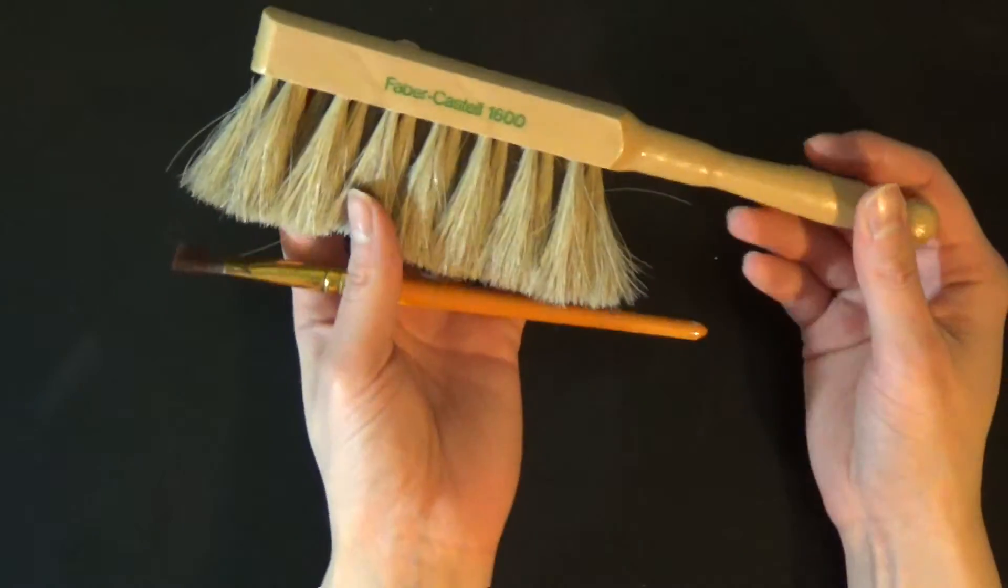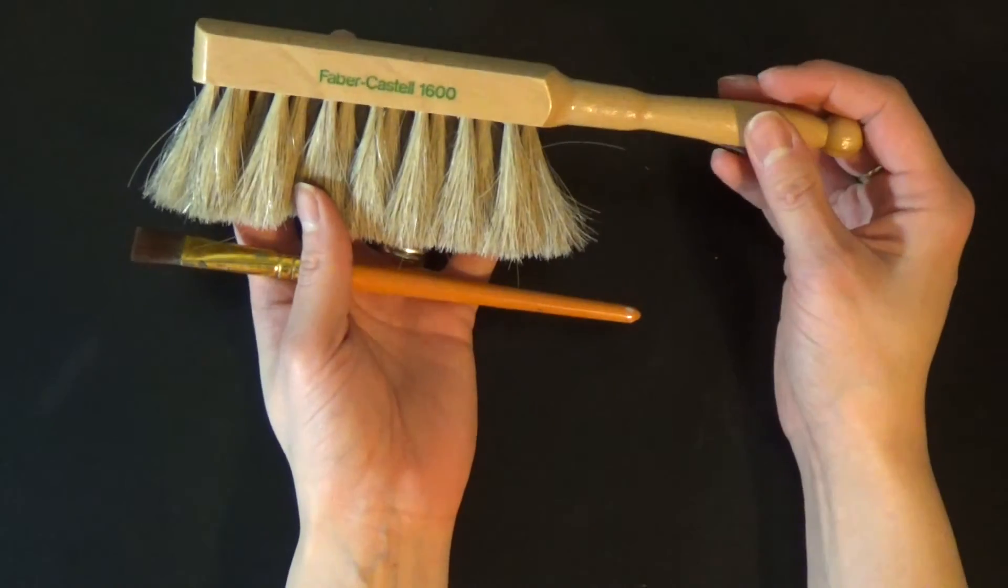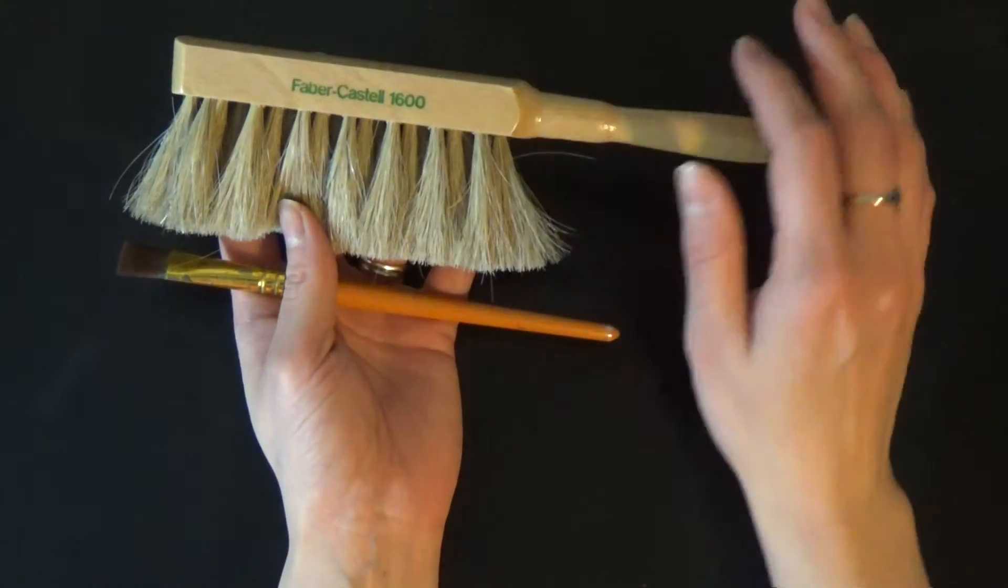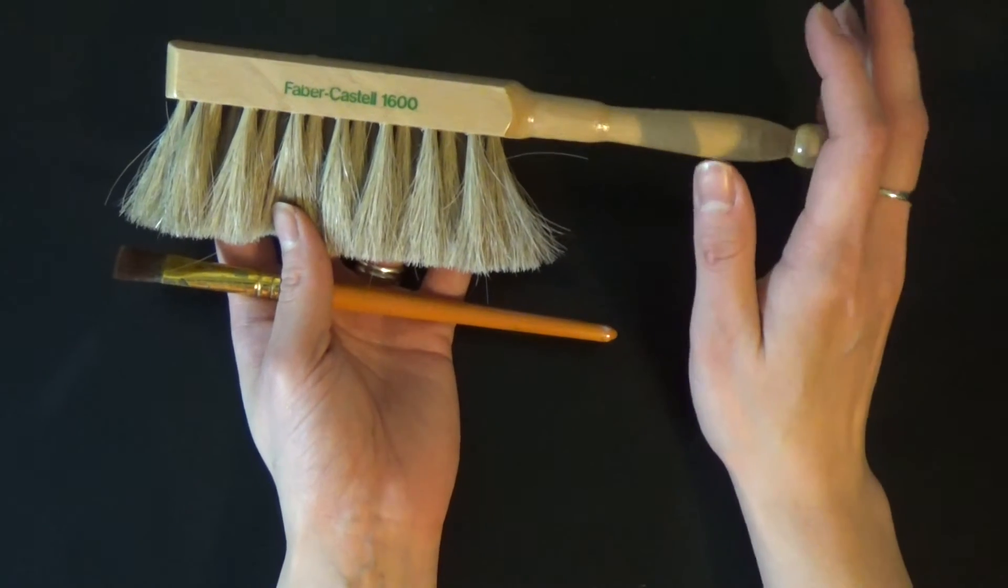These next ones I would consider essential but they're not as essential as the previous ones. So the first one is brushes. So I've got two here. The first one is a Faber-Castell drafting brush and I like to use this to brush any eraser crumbs or dust from my work as I'm working.